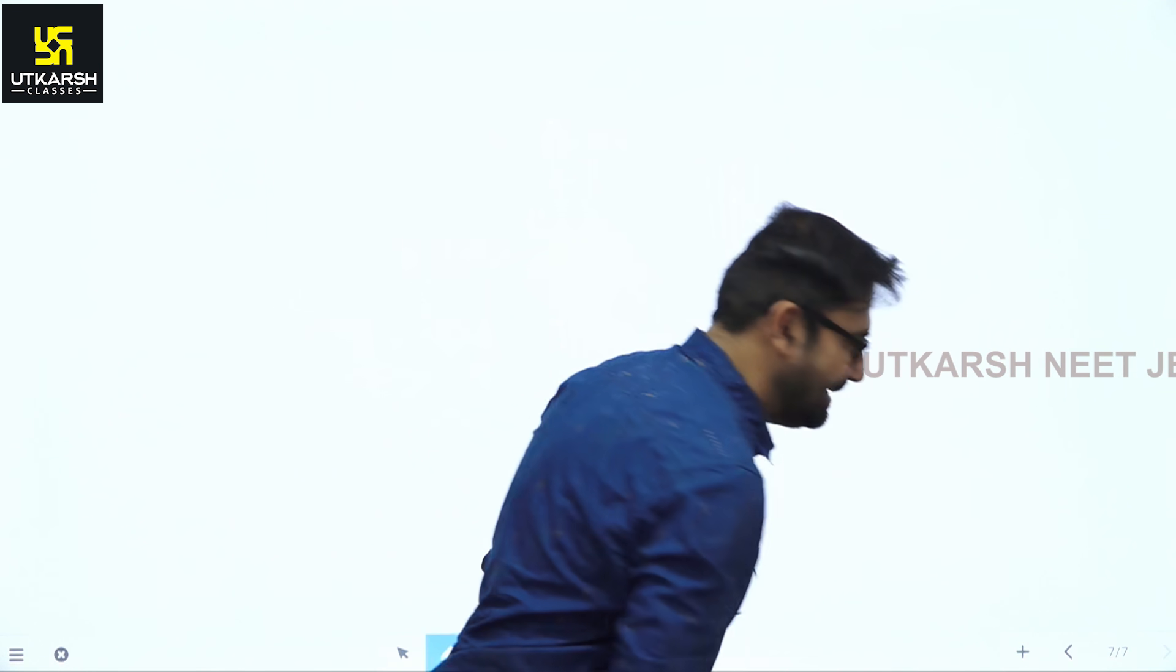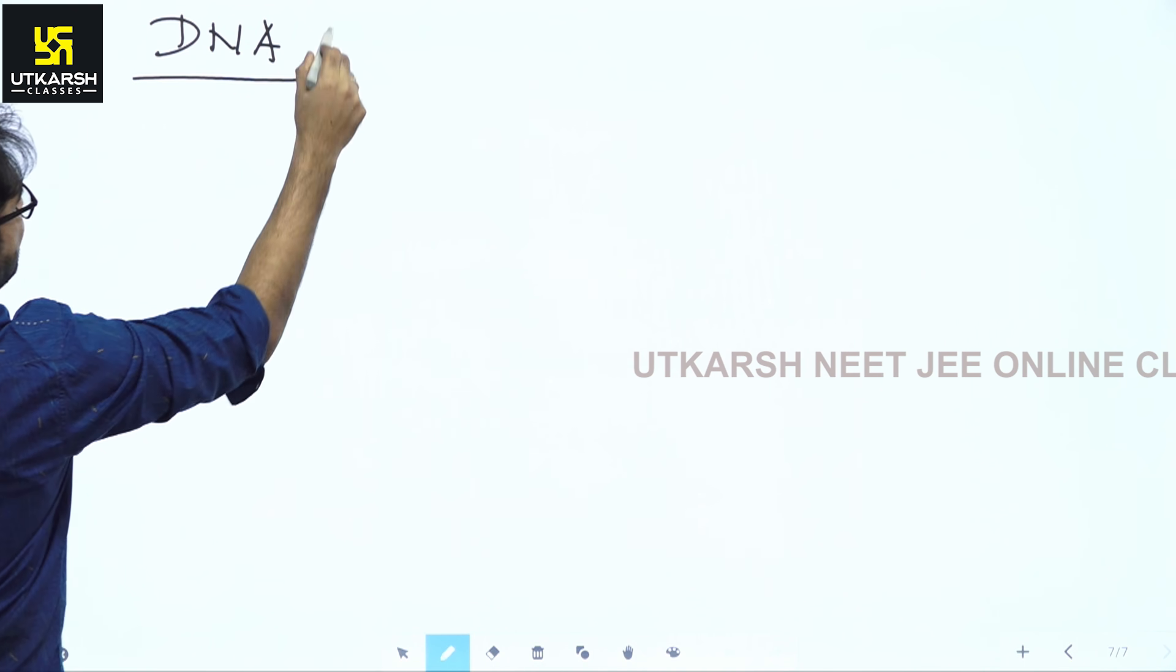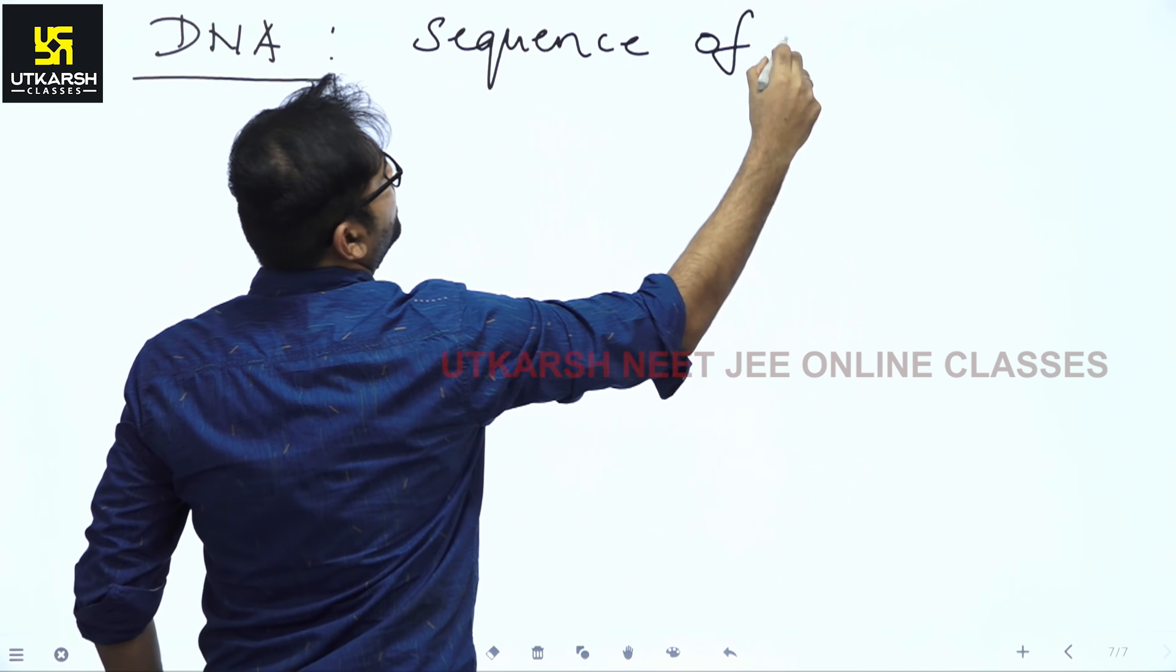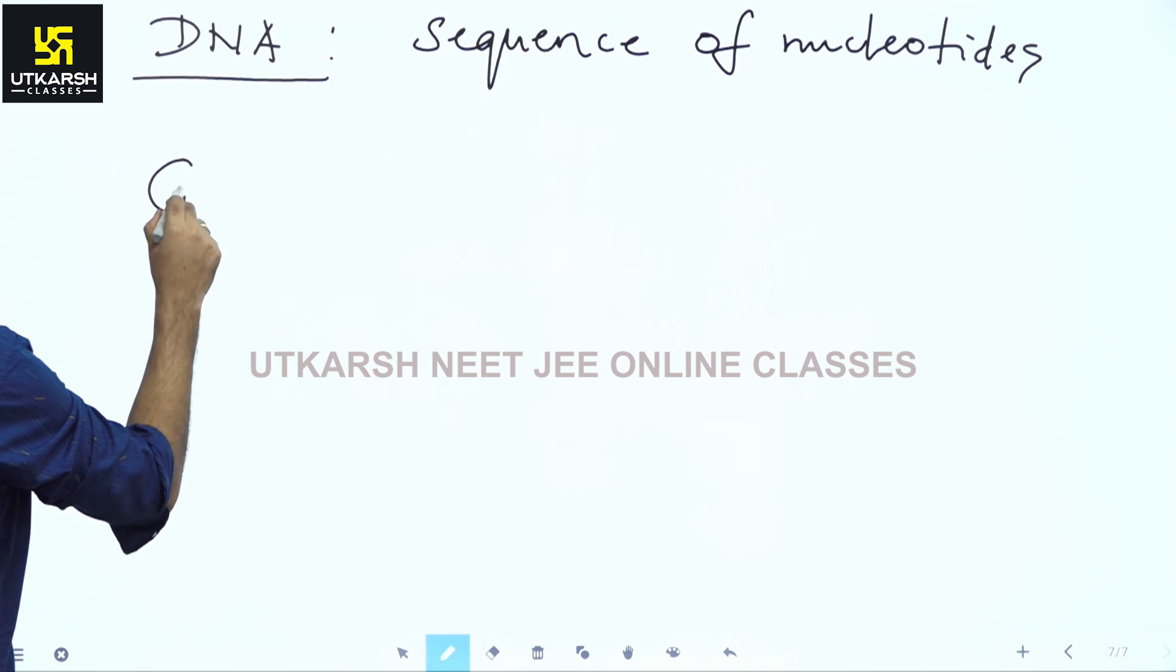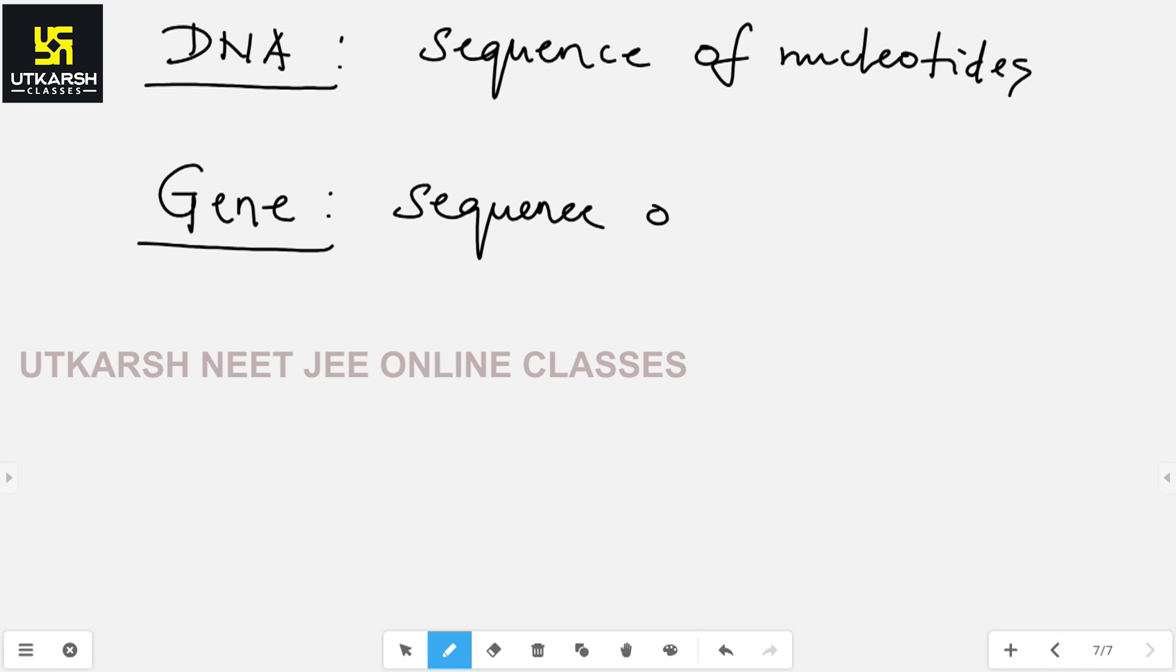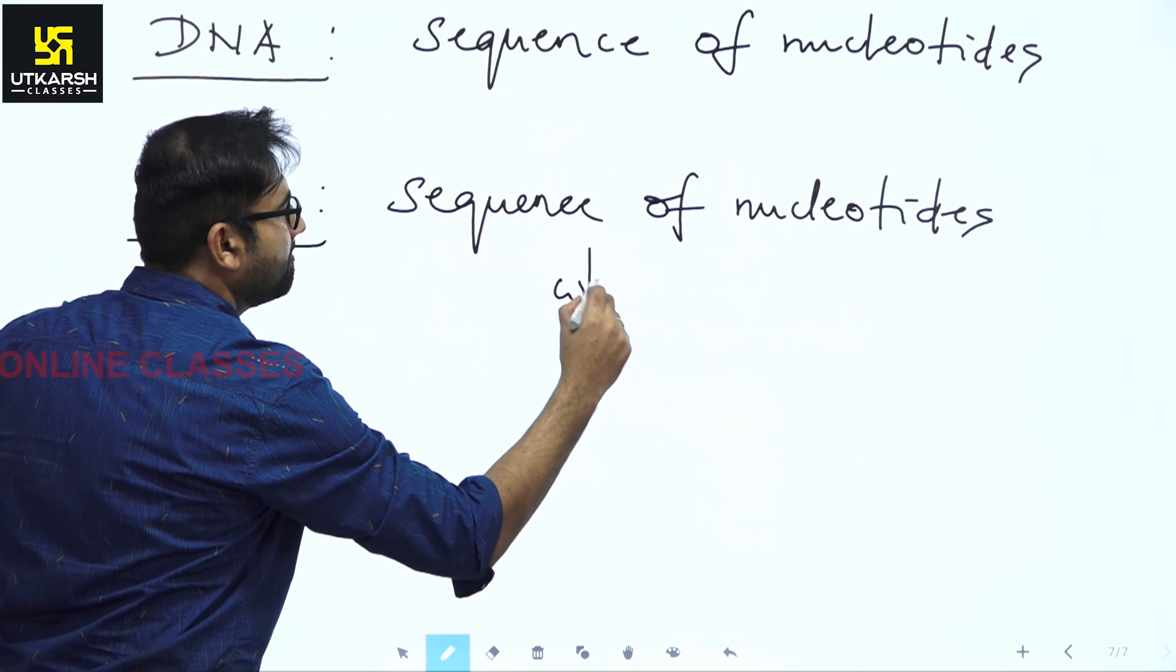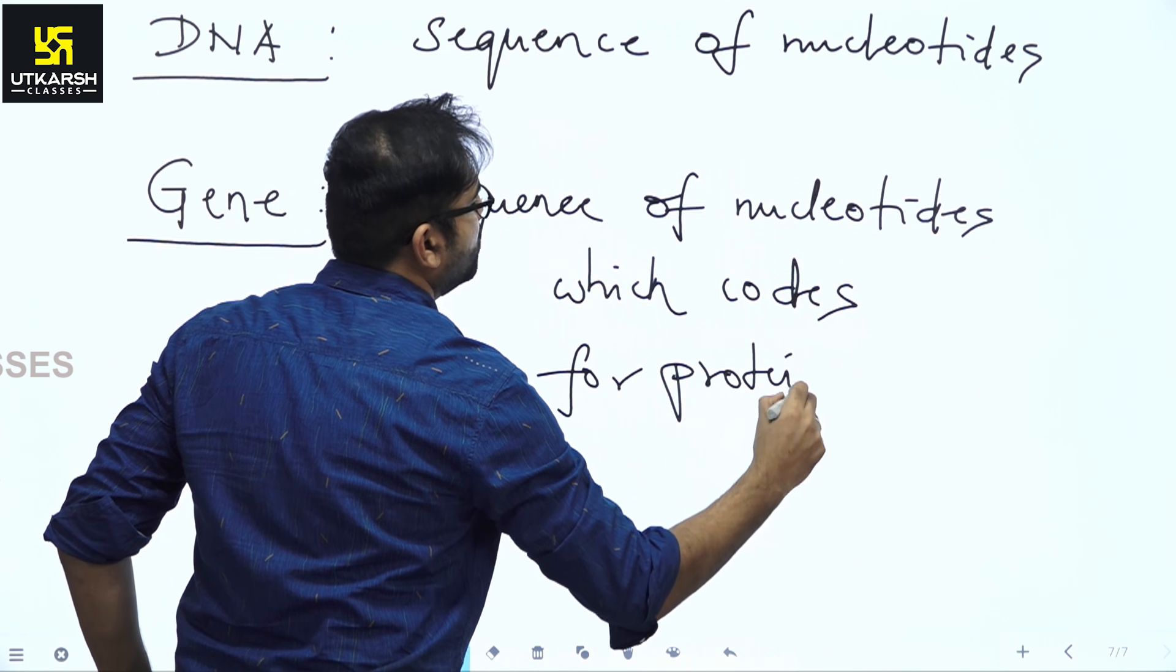So, guys, let's get into it again. We said that a DNA is nothing but a sequence of nucleotides, correct? I also implied that gene is also a sequence of nucleotides, but with a difference, with a sequence of nucleotides. Yes, you've got it right, which codes for proteins.